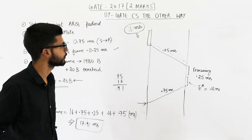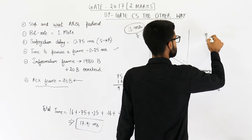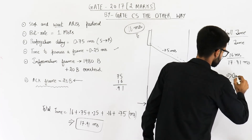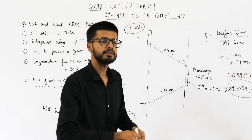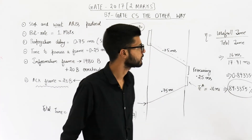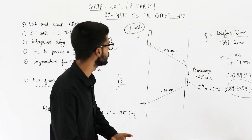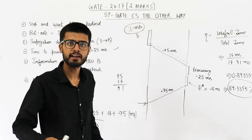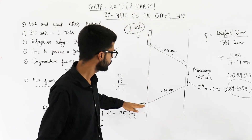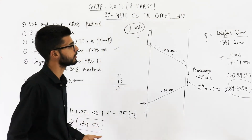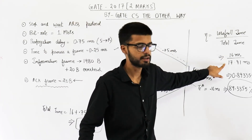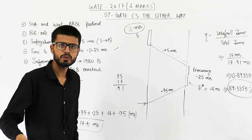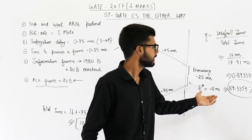Efficiency is useful time divided by total time. The useful time is only the 16 milliseconds taken by the sender to transmit a frame, but we have to wait the entire 17.91 milliseconds to get its acknowledgement. So efficiency is 16 / 17.91 = 89.3355%. They were asking to round off to two decimal places, so the answer is 89.34%.